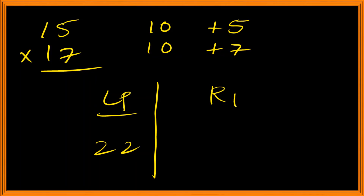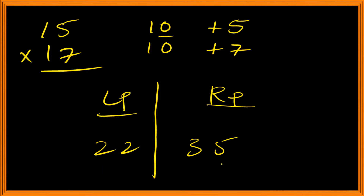The right part is 5 multiplied by 7, which is 35. Since the number of zeros in the base equals the number of digits in the right part, we have to carry the 3 over to the left part.